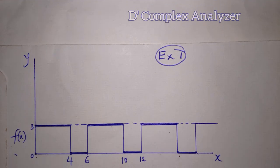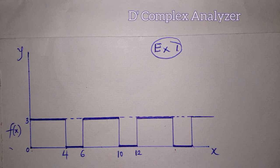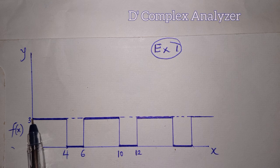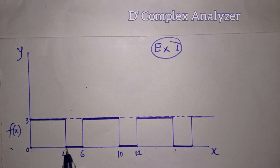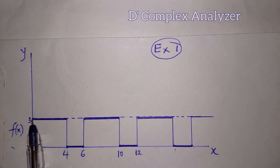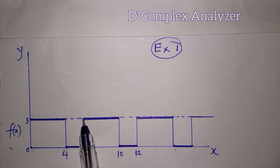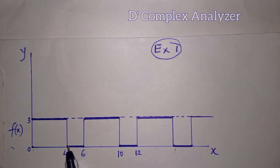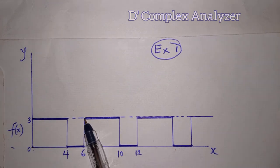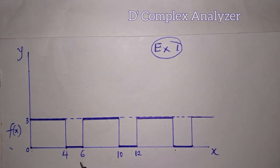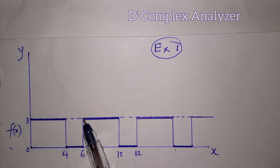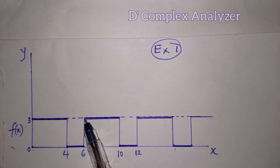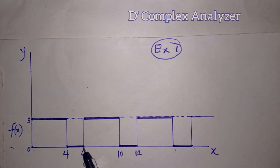This is the first example. We can also determine the period of a non-sinusoidal function. Take note of these thick lines. The function started from here and at this point again it started again. It started from here and then it started again. That means the period of this function is 6, because at x equal to 6 the function started repeating itself. So the period of this function is 6.